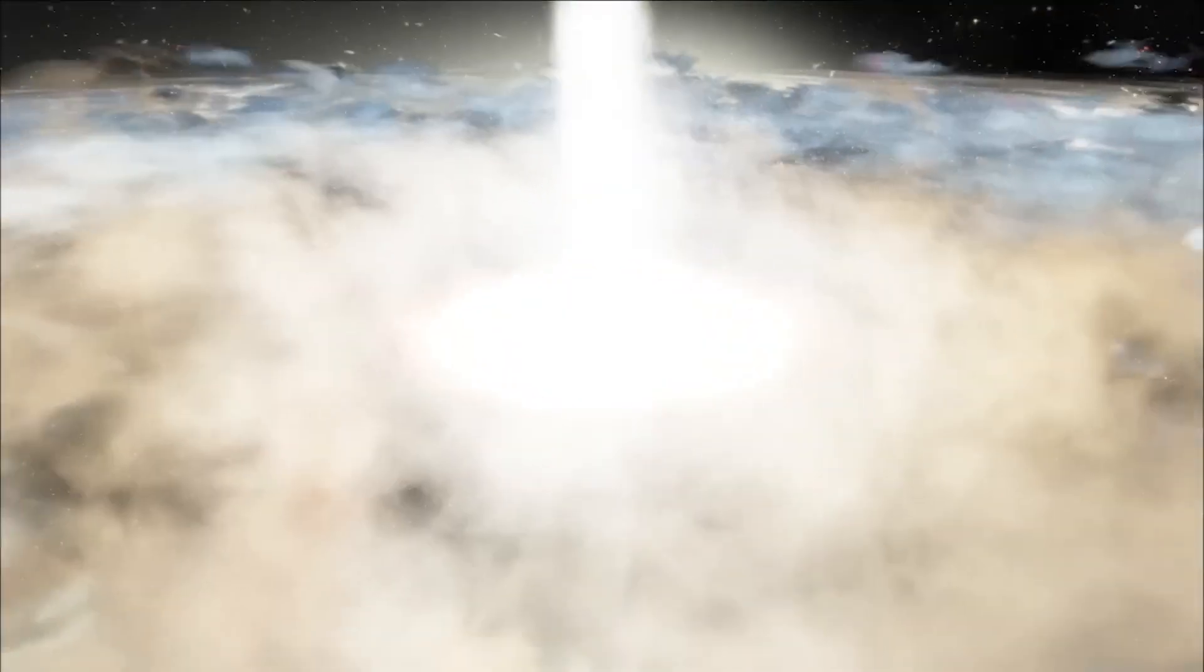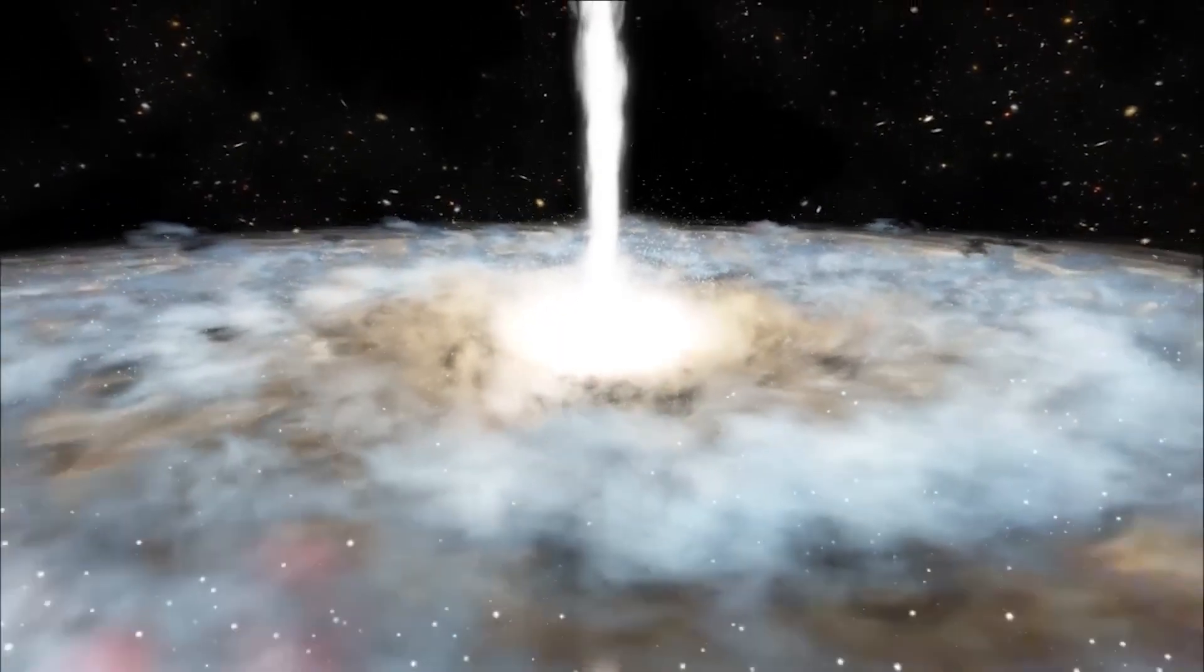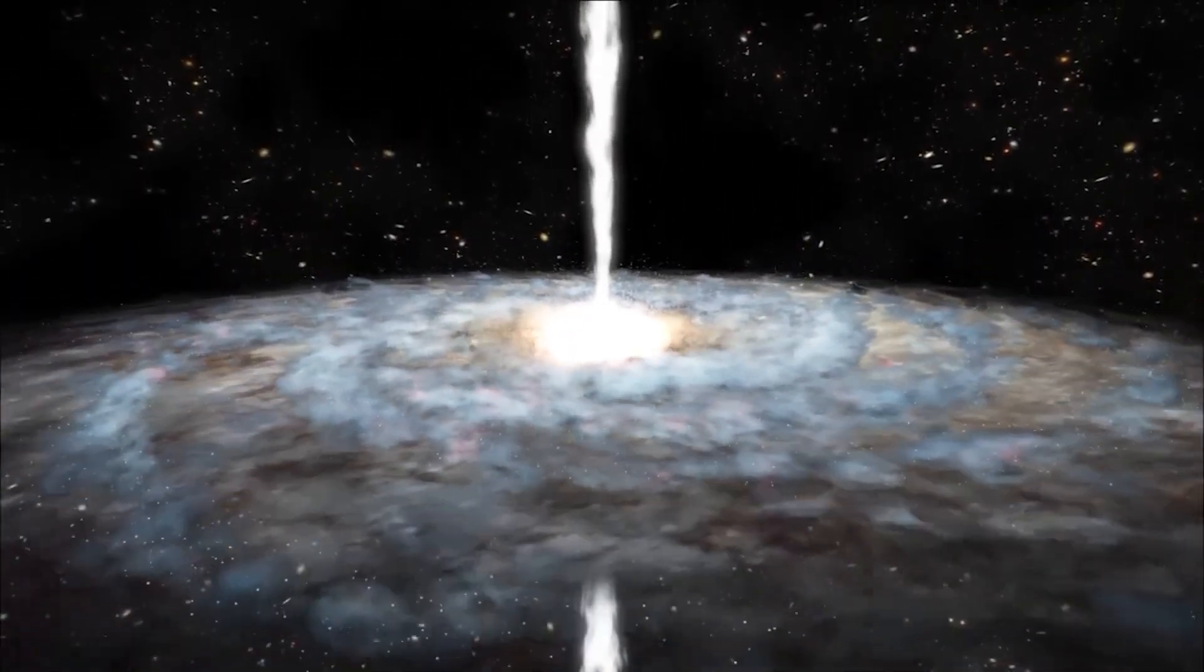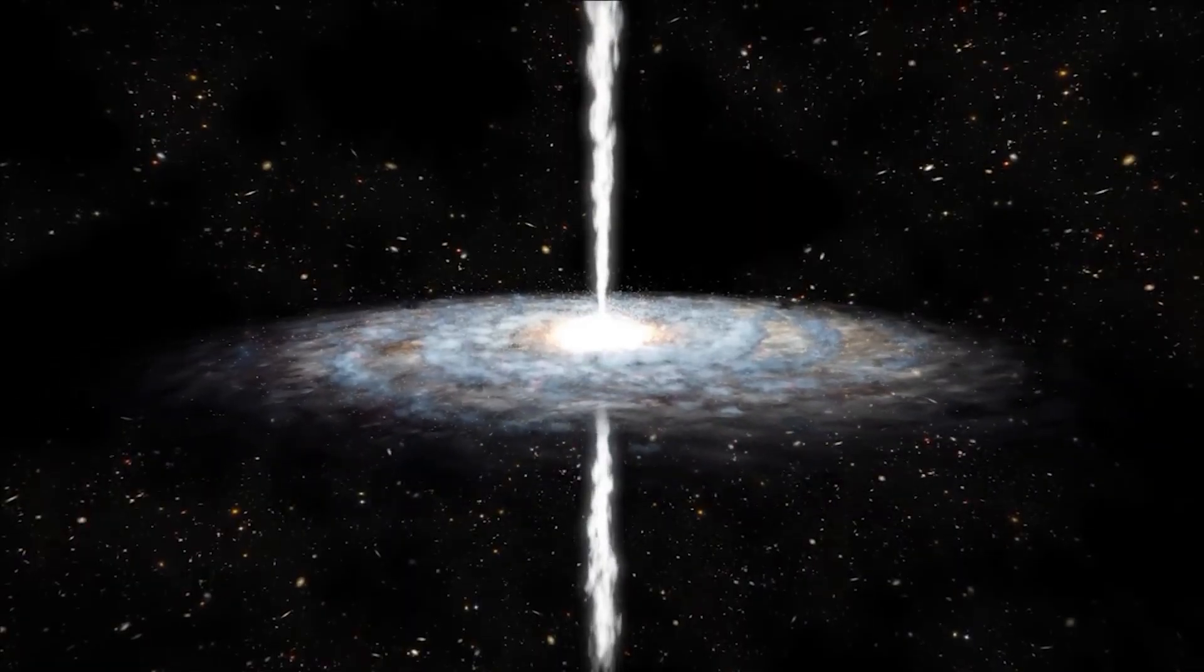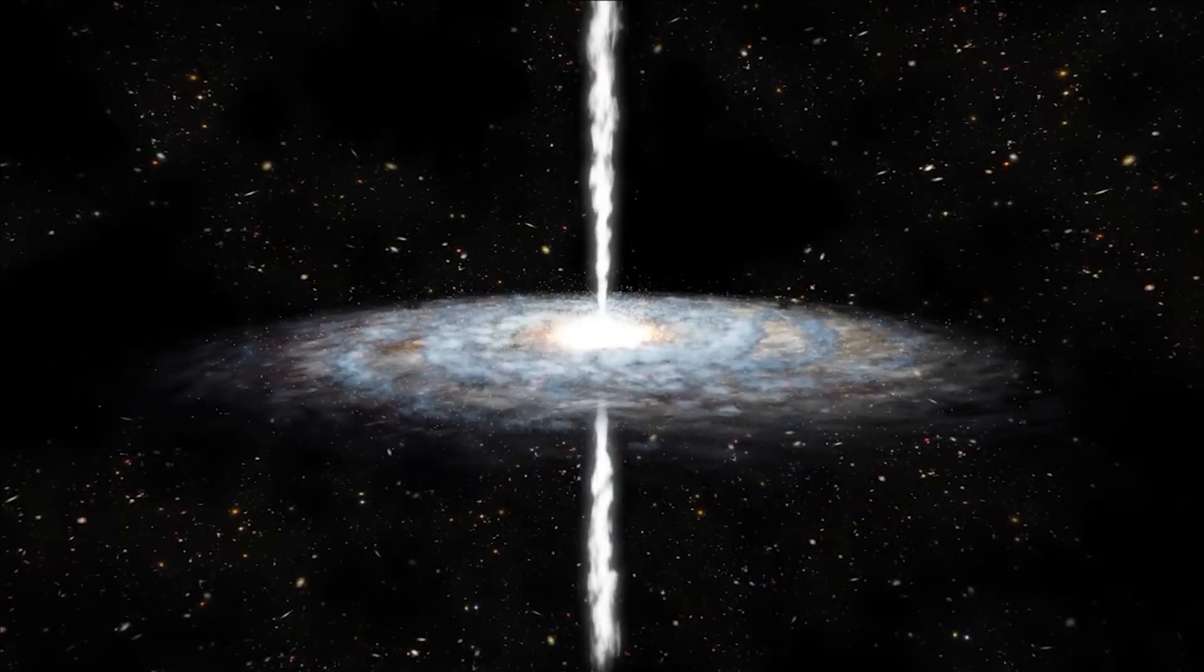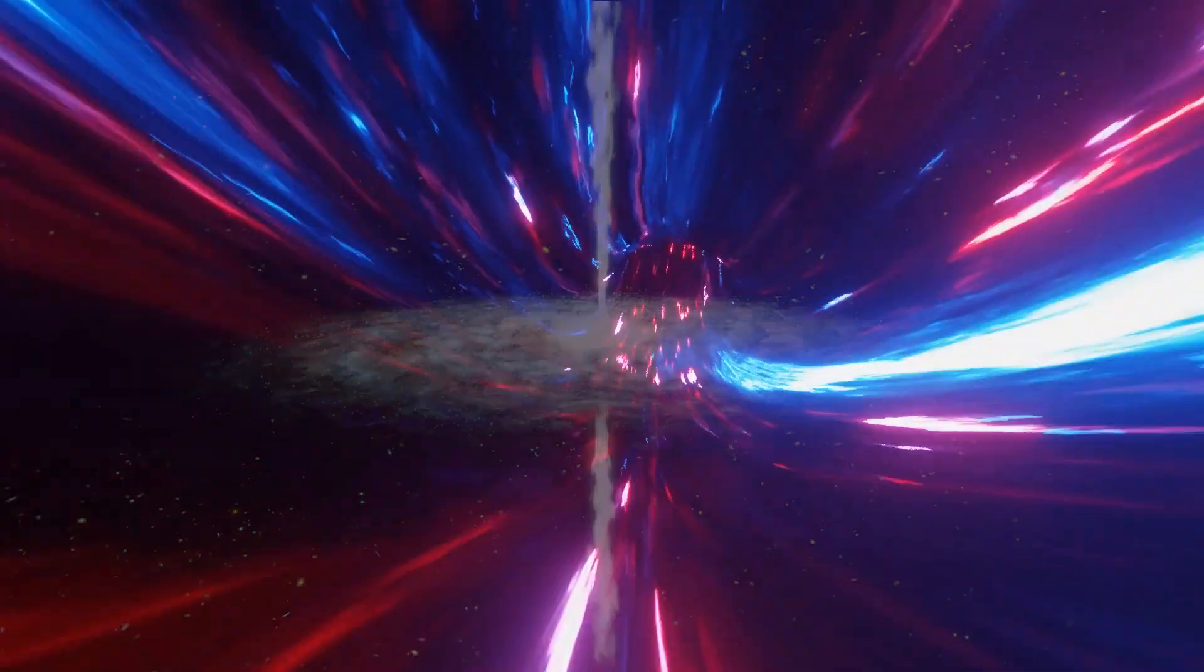One of the most interesting aspects of white holes is their possible relationship to black holes. Some scientists have proposed the idea of a wormhole connecting a black hole and a white hole, suggesting that they could be different manifestations of a unified phenomenon. According to this idea, matter falling into a black hole could emerge from a white hole in a different region of spacetime or even in another universe.